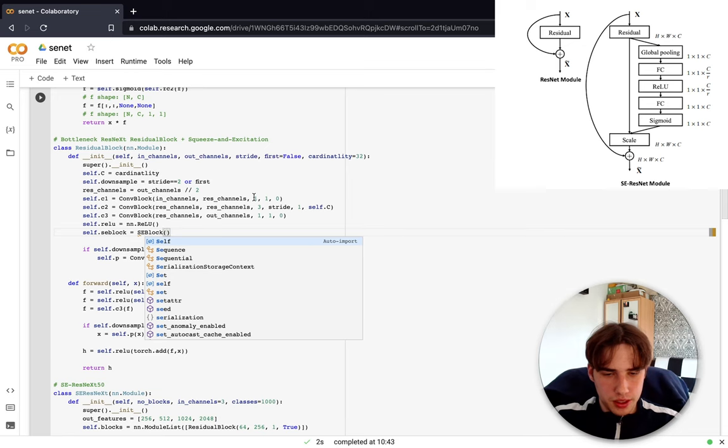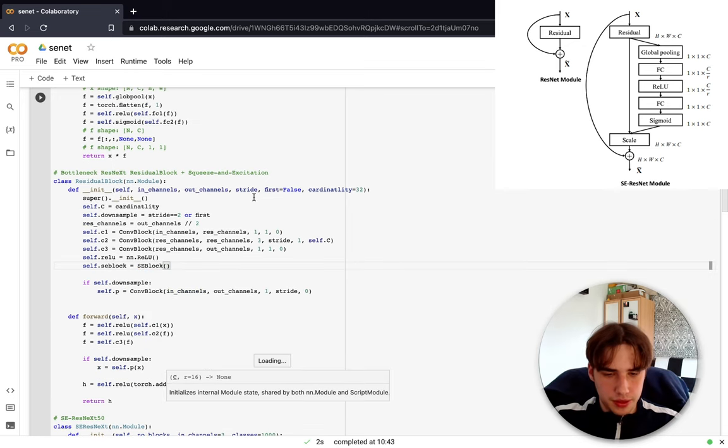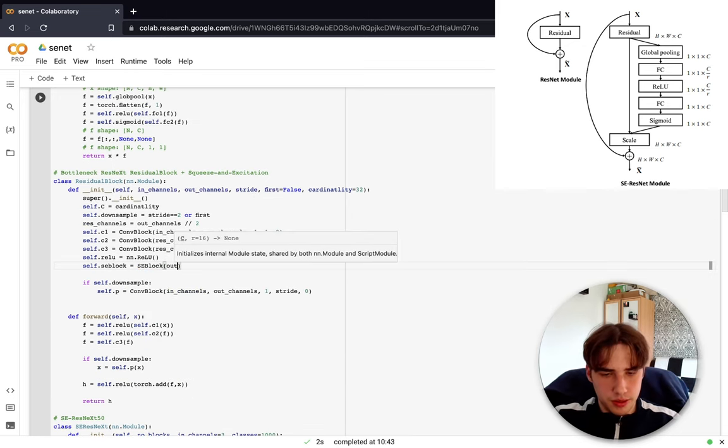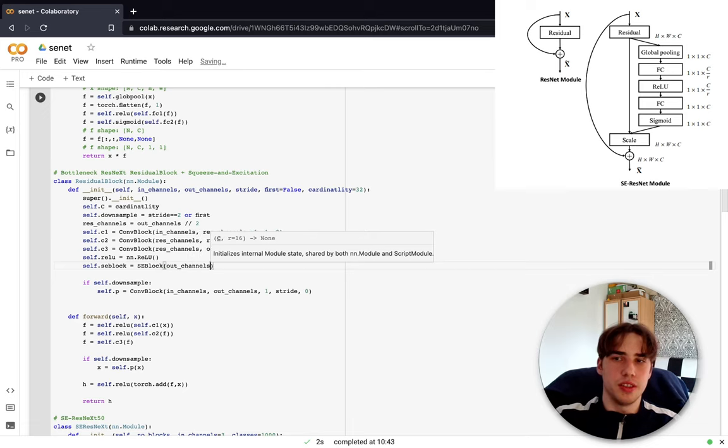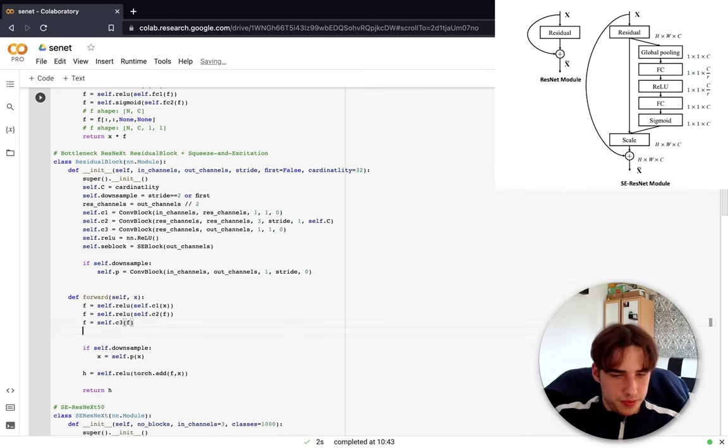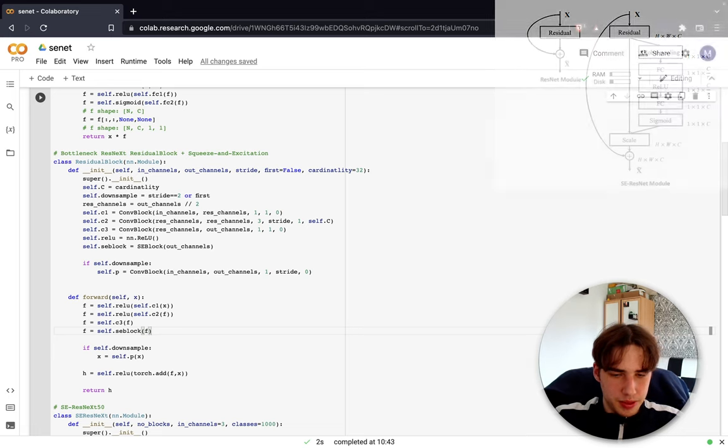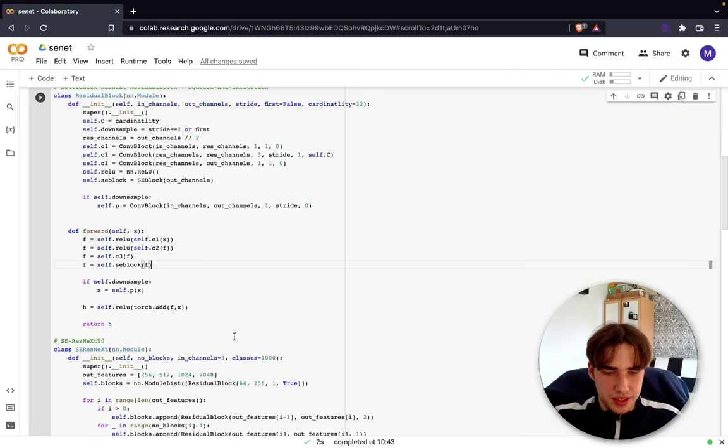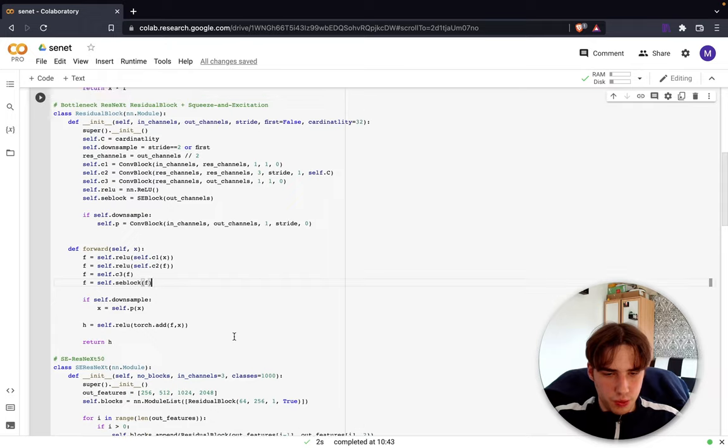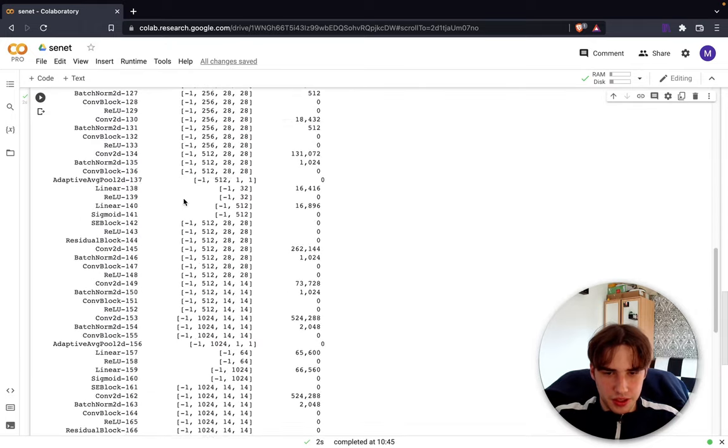We get our residual block, we just add se_block is equal to SE, and we need to define c. That's output channels because we put it after the residual map. Then we just basically pass the output of residual mapping to our SE block.